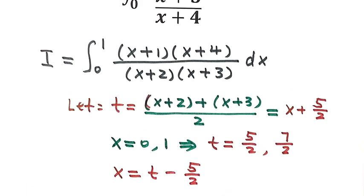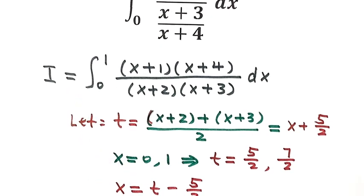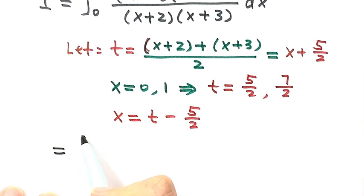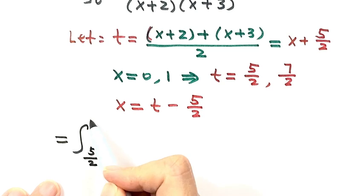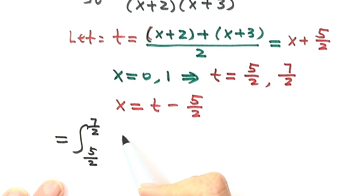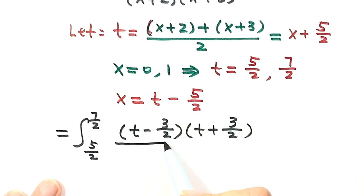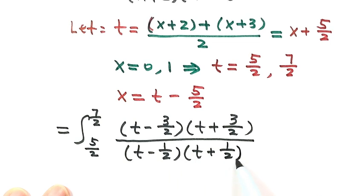Now we do the substitution, replacing all x with t - 5/2. The integral becomes: from 5/2 to 7/2, on top (t - 3/2)(t + 3/2), and on the bottom (t - 1/2)(t + 1/2), then dt.